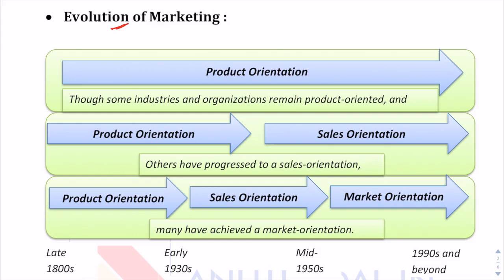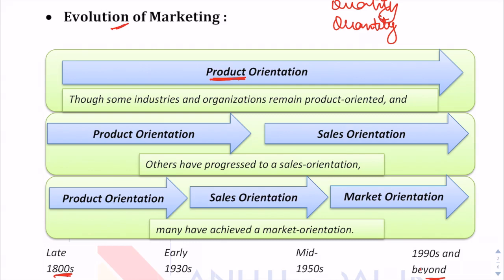We are going to know about the evolution of marketing — how marketing came into its current form. We will study this journey of marketing from the late 1800s to the current time. First, marketing used to be product oriented, meaning the focus was on the quality and quantity of the product. Marketers used to believe that if they developed a product which is good in quality and appropriately priced within the affordability range of the customer, the customer would come and buy the product easily.